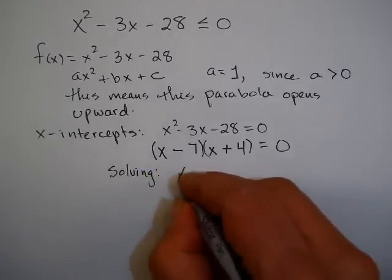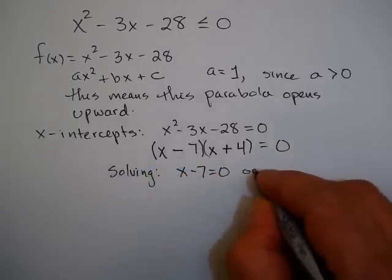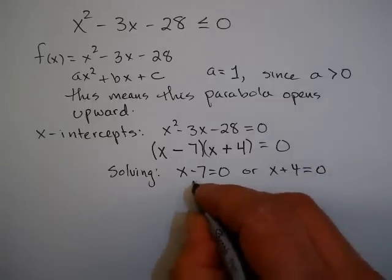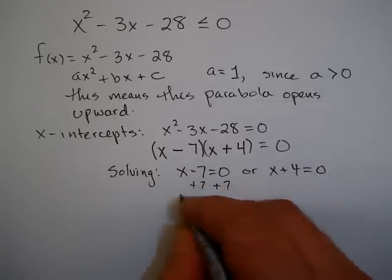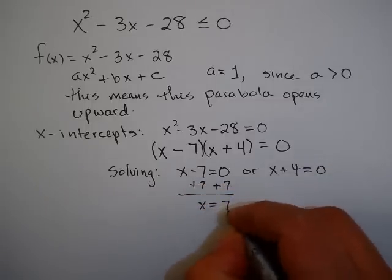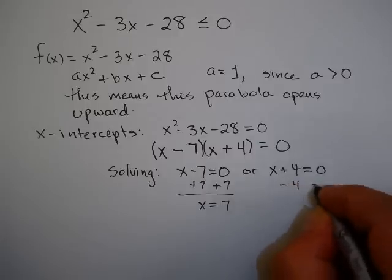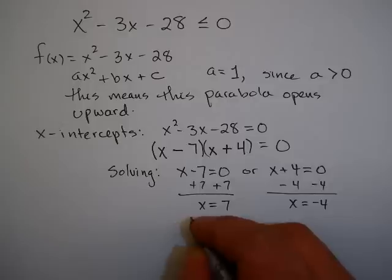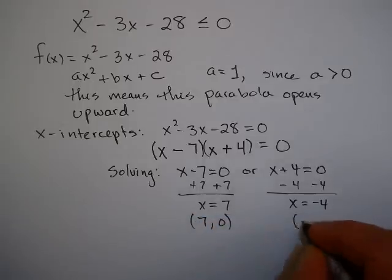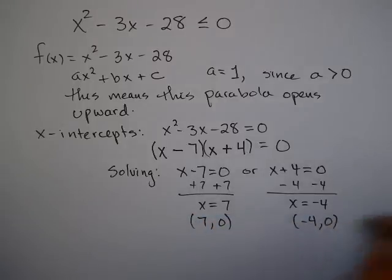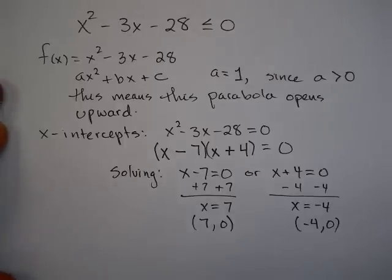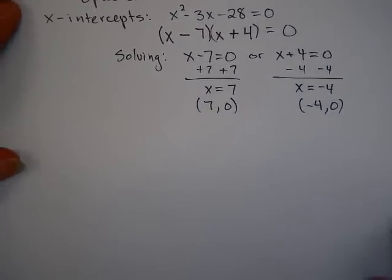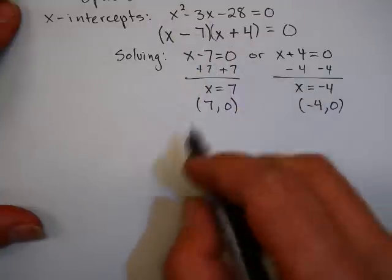Now, since this middle term is negative 3, I'm going to go negative 7 plus 4. Now, solving, I get (x - 7) = 0, or (x + 4) = 0, add 7 to each side, and I get x = 7, subtract 4 from each side, and I get x = -4. This gives me the x-intercepts: (7, 0) and (-4, 0).